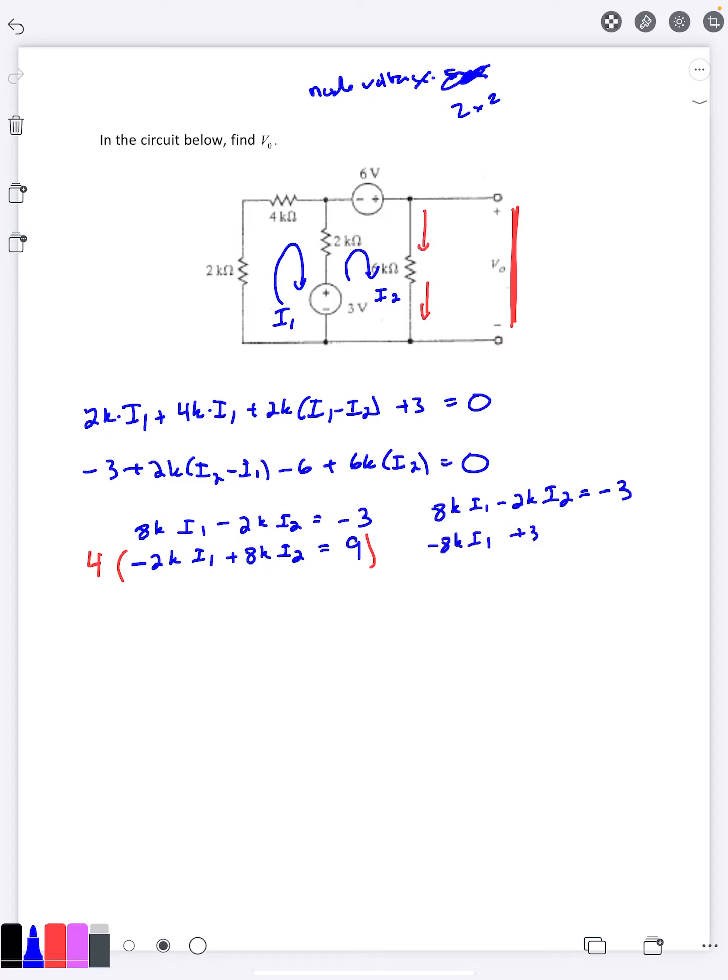Add down, the i1's cancel, and I get 30k i2 equals 33. So i2 then is 33 over 30k, which makes it 1.1 milliamps for i2.